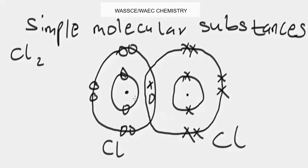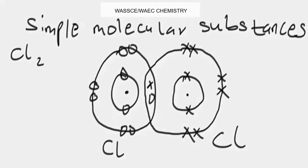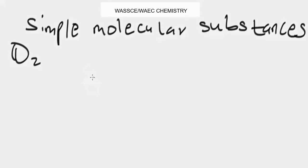Now let's look at oxygen molecule. Each oxygen atom needs two more electrons to complete its outer shell. In oxygen gas, two oxygen atoms share two pairs of electrons with each other, making a double covalent bond. Oxygen has an atomic number of eight and six electrons in the outer shell, so it needs to gain two more electrons to achieve stability like a noble gas.